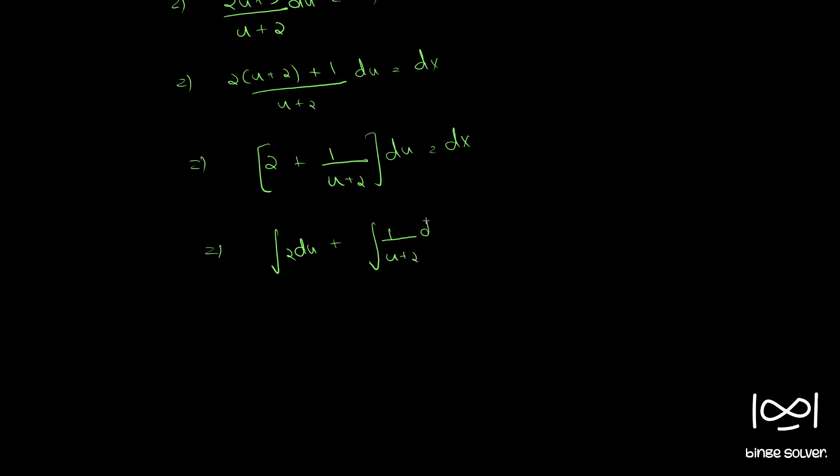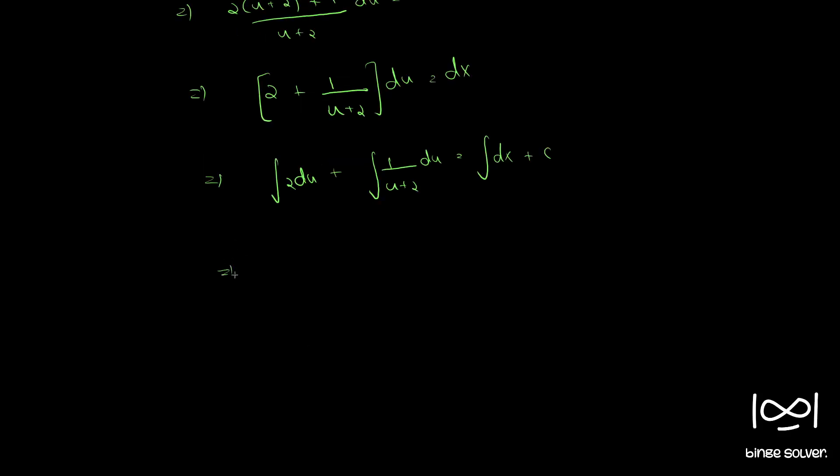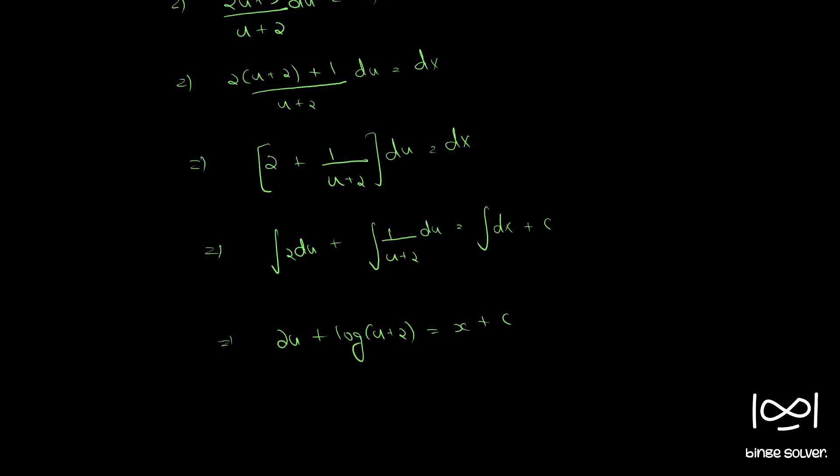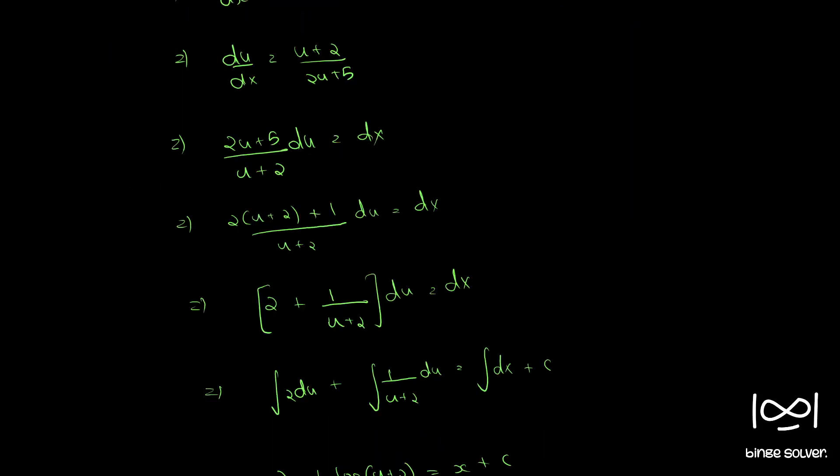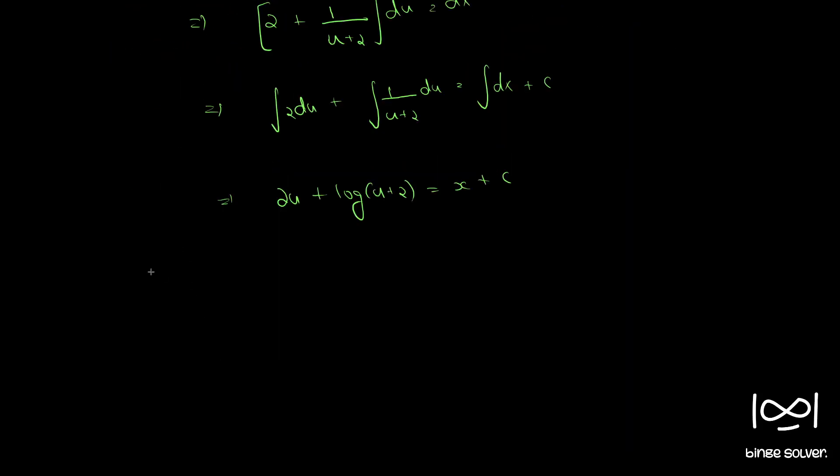Integrating both sides, we get ∫2 du + ∫1/(u + 2) du = ∫dx + c. This gives 2u + log(u + 2) = x + c. From equation 2, we can see that x - y = u.